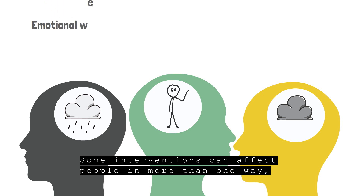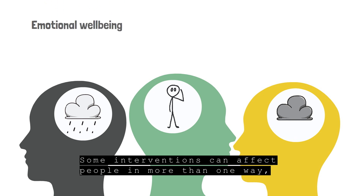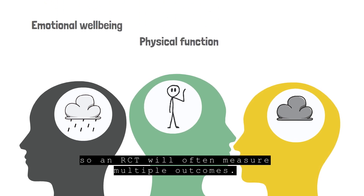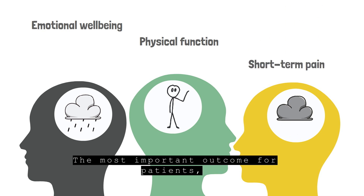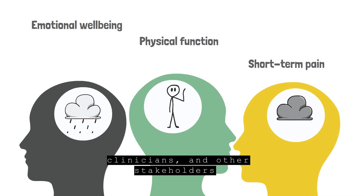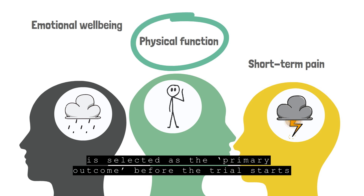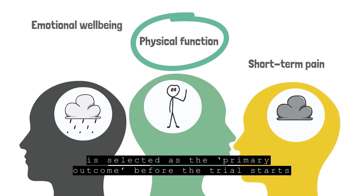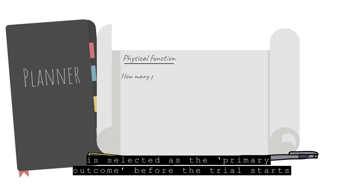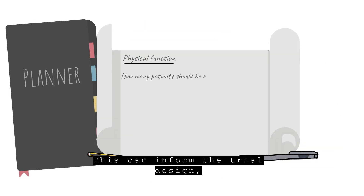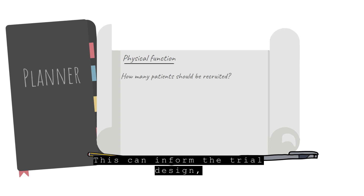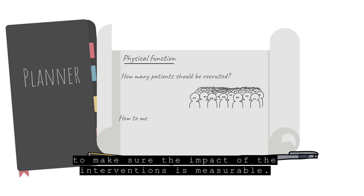Some interventions can affect people in more than one way, so a randomised controlled trial will often measure multiple outcomes. The most important outcome for patients, clinicians and other stakeholders is selected as the primary outcome before the trial starts. This can inform the trial design, including how many people will need to participate to make sure the impact of the intervention is measurable.